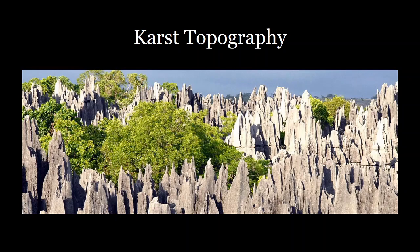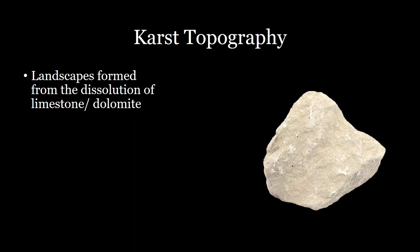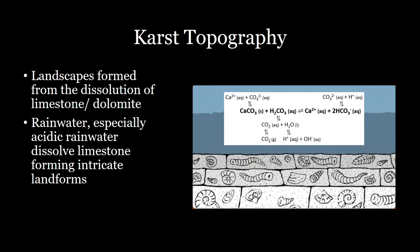Karst topography, like this one that you can see here, is just a landscape formed from the dissolution of limestone or dolomite. Limestone is rock formed from calcite — calcium carbonate — and dolomite is just calcite with a bit more magnesium in it. You can see an example of a limestone rock here, and the important thing about these is that they can dissolve.